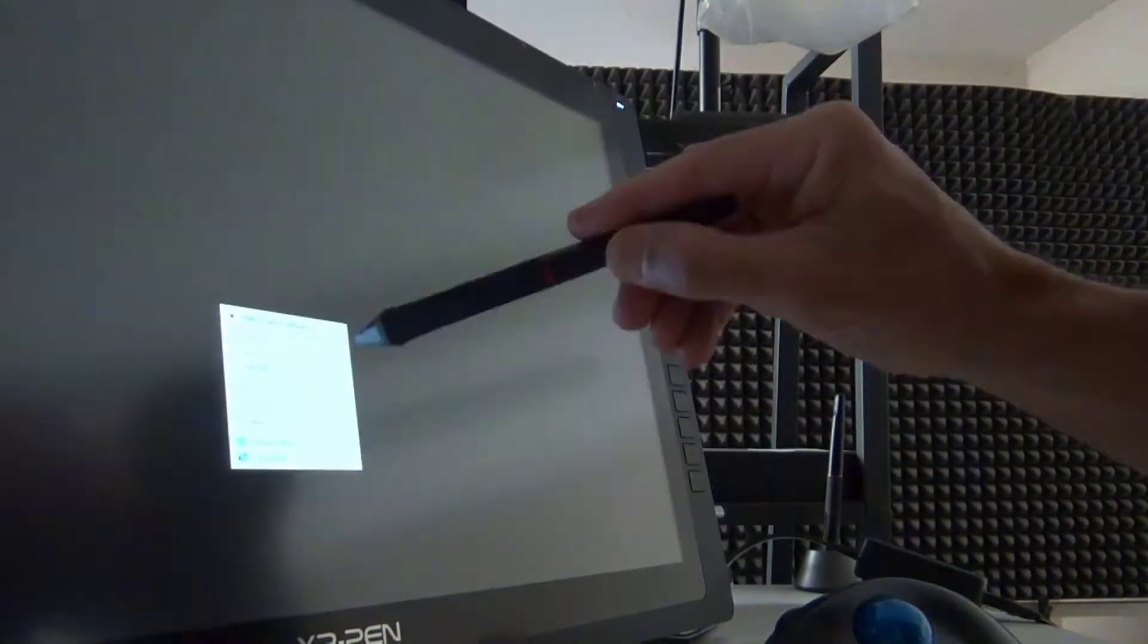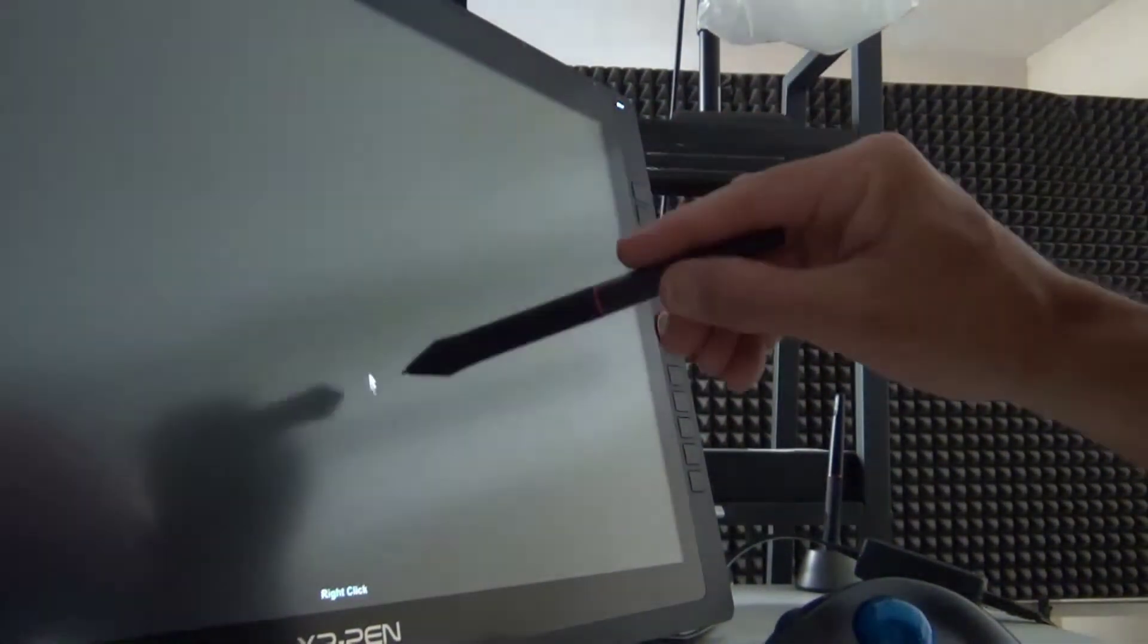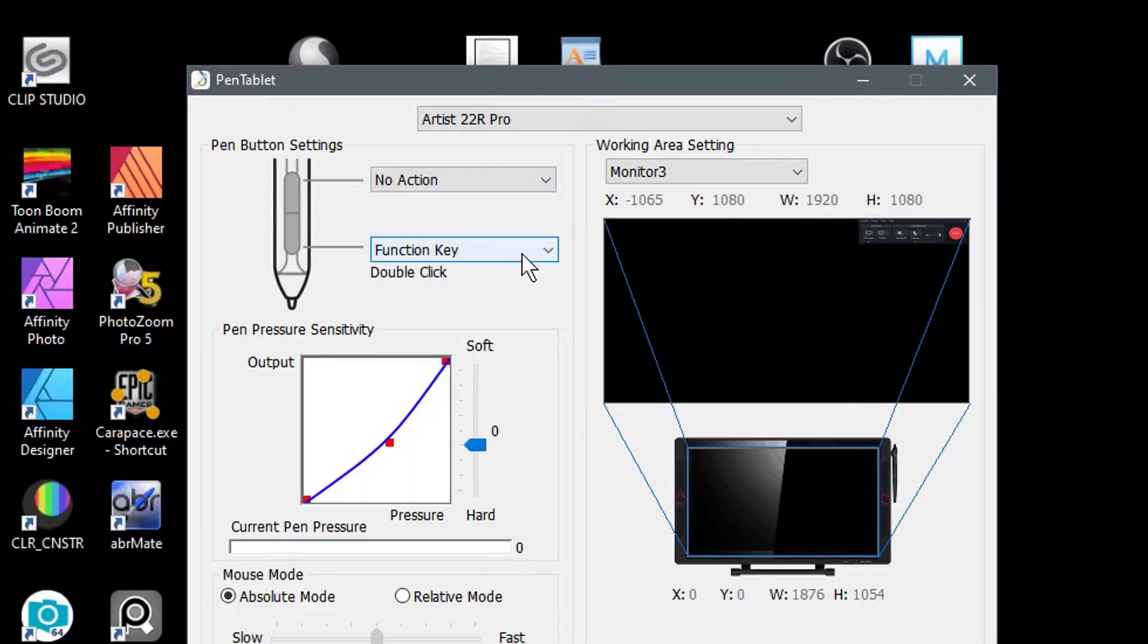The issue I was having was that the pen would just trigger randomly. I tried setting the barrel buttons to no action, but to make a long story short, that didn't help at all.